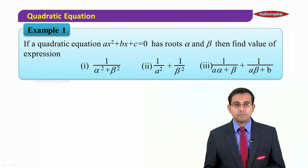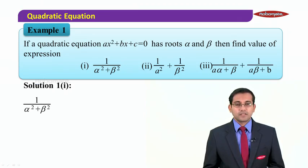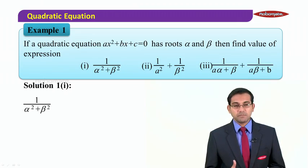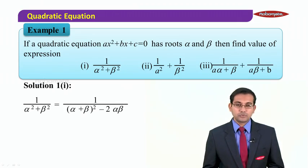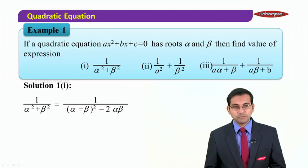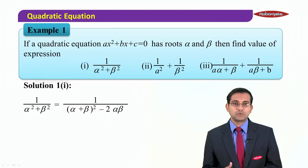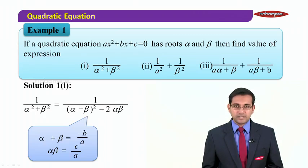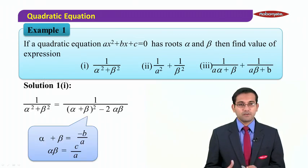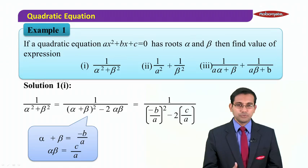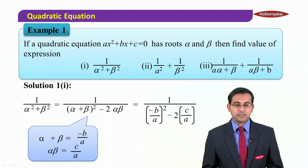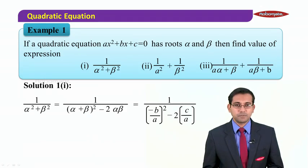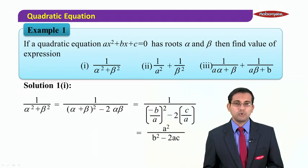Since alpha and beta are roots of ax² + bx + c, we know that α+β = −b/a and αβ = c/a. We write 1/(α² + β²) as 1/[(α+β)² − 2αβ], and substituting α+β = −b/a and αβ = c/a into this expression, we get a simplified result which simplifies to a²/(b² − 2ac).